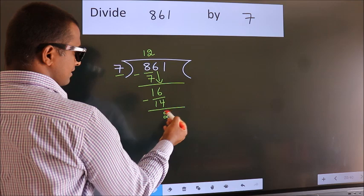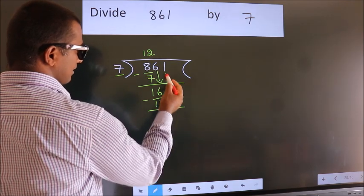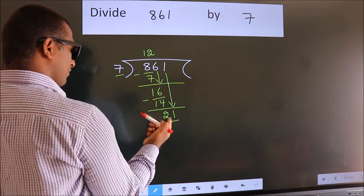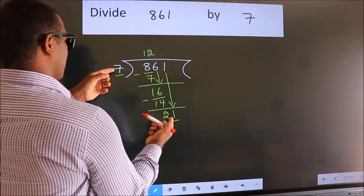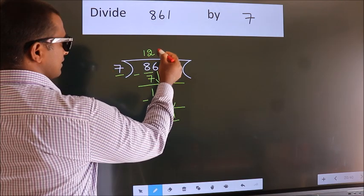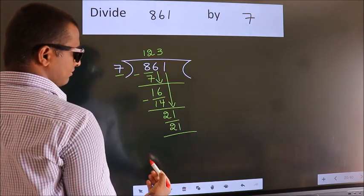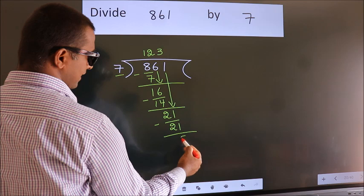After this, bring down the beside number. So, 1 down. So, 21. When do we get 21? In 7 table. 7 3s 21. Now, we subtract. We get 0.